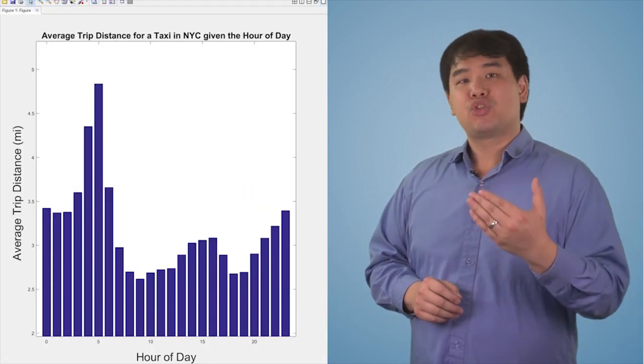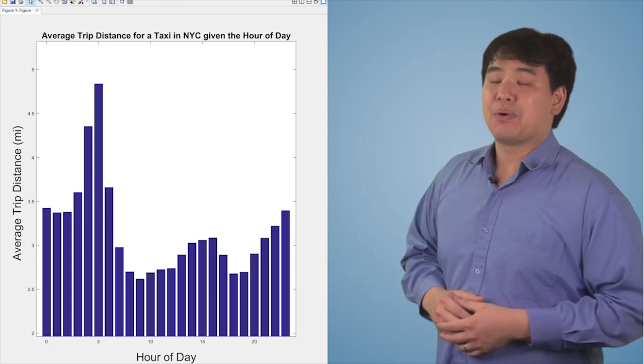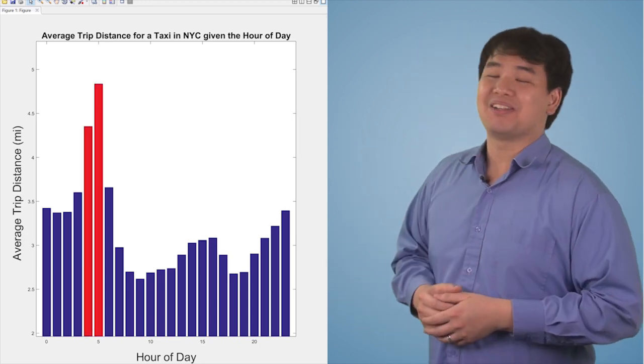Now here we have the graph of average trip distance versus hour of day. You can see that people during the hours of 4 to 6 a.m. tend to take longer trips.